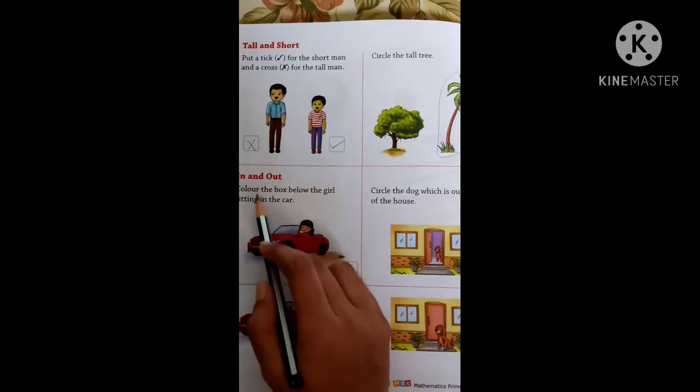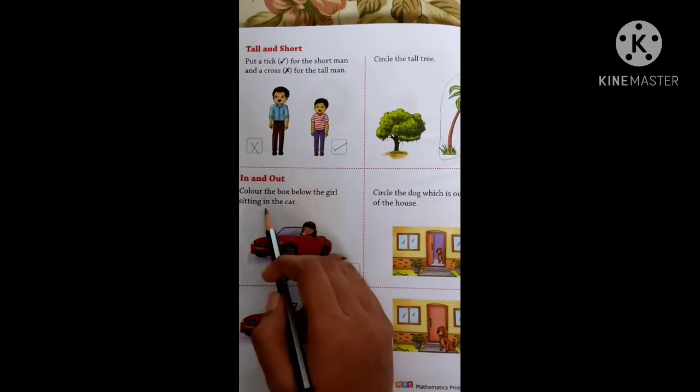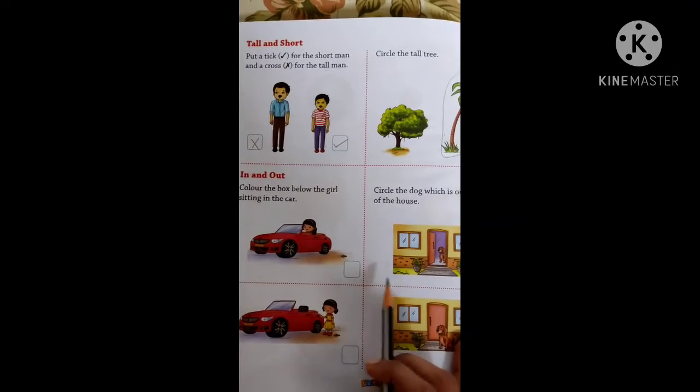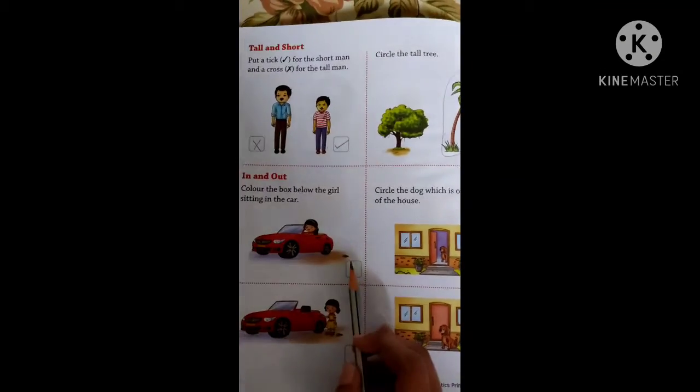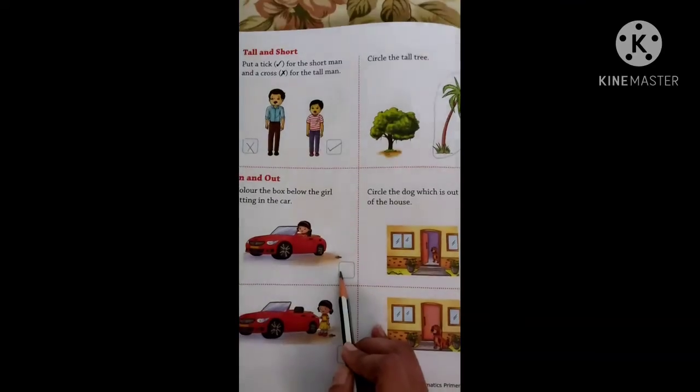Now what is given. Color the box below the girl sitting in the car. What you have to do children, the girl is sitting in the car. In that box, you are supposed to color.